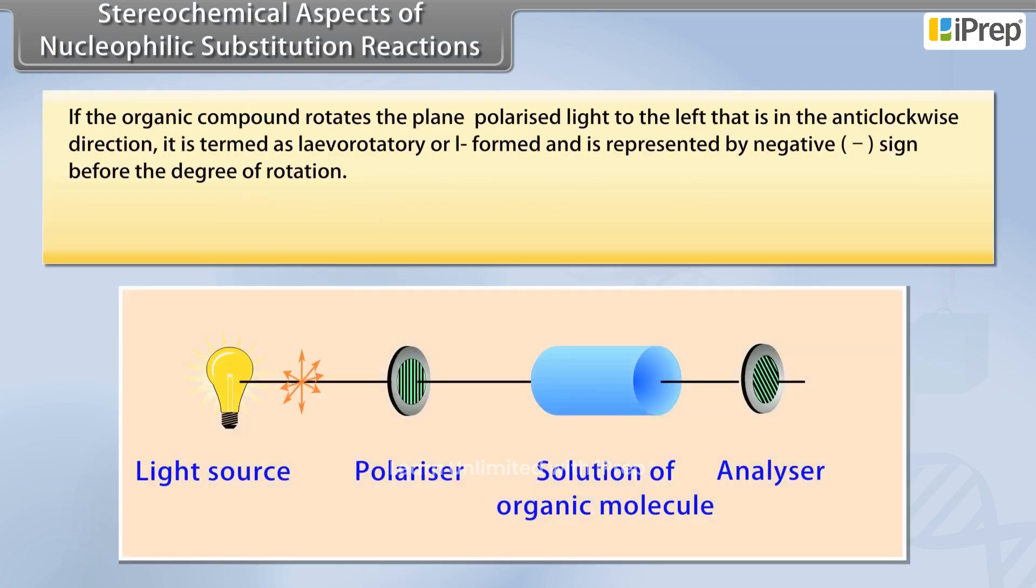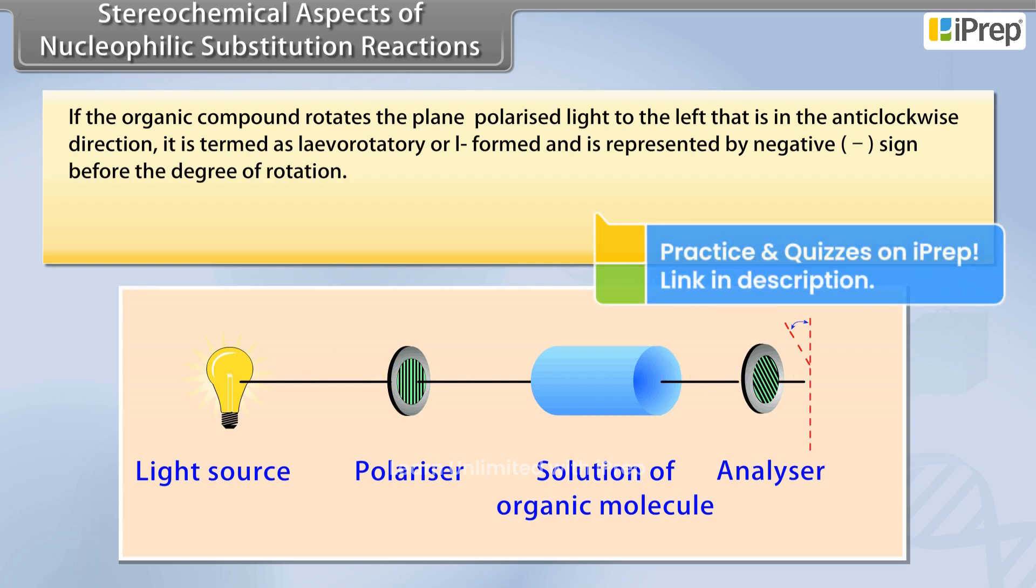If the organic compound rotates the plane polarized light to the left, that is, in the anticlockwise direction, it is termed as levorotatory or l-formed and is represented by negative (−) sign before the degree of rotation.